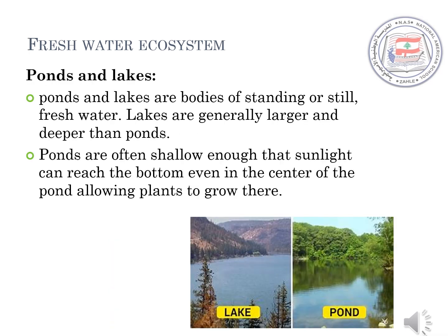Another type of freshwater ecosystem includes ponds and lakes. Ponds and lakes are bodies of standing or still fresh water. Lakes are generally larger and deeper than ponds. Ponds are often shallow enough that sunlight can reach the bottom, even in the center of the pond, allowing plants to grow there. As you can see in the picture, the pond is shallow and the lake is deep; the pond is smaller and the lake is bigger.